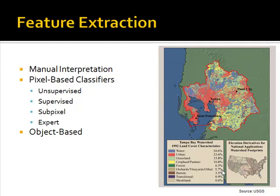One of the most common uses of remotely sensed data is to extract information from it. There are generally three different types of feature extraction techniques: manual interpretation; pixel-based classifiers, in which each pixel is assigned to an individual land cover class; and object-based methods, in which pixels are grouped together into meaningful objects and then assigned to classes.